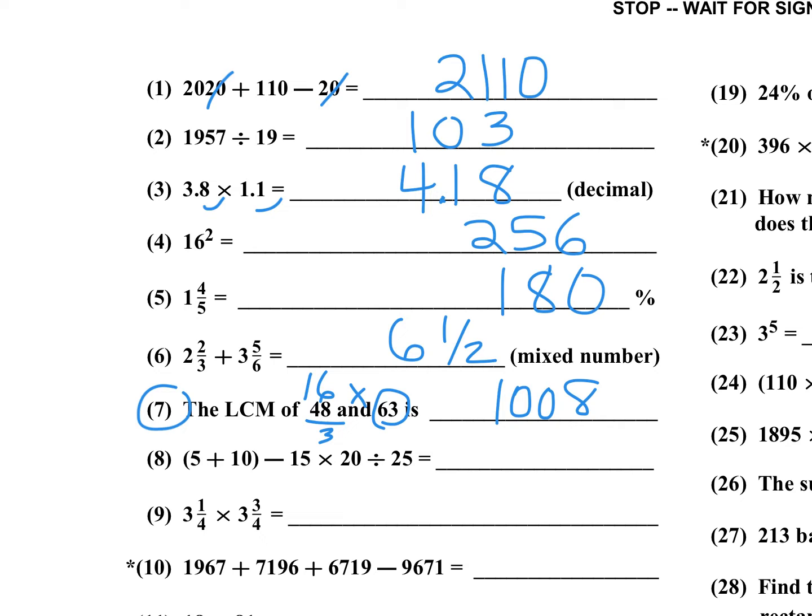Number 8: 5 plus 10 is 15, and then over here you have 15 times 20 divided by 25. I'm going to divide by 5 here and divide by 5 here because I'm divided by 25, so I'm going to have 4 times 3, this is 12. So 15 minus 12, the answer is 3.